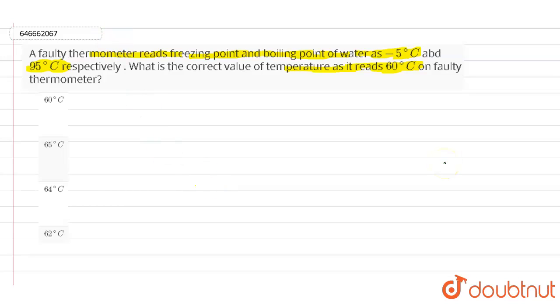We have a faulty thermometer which has the freezing point and boiling point as minus 5 degrees Celsius and 95 degrees Celsius. According to that, x minus LFP divided by UPF minus LFP.